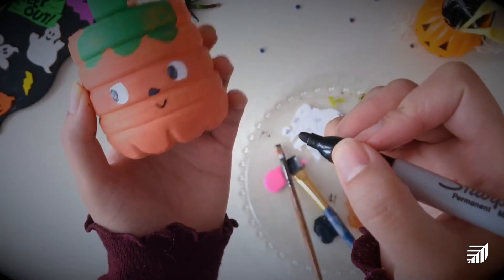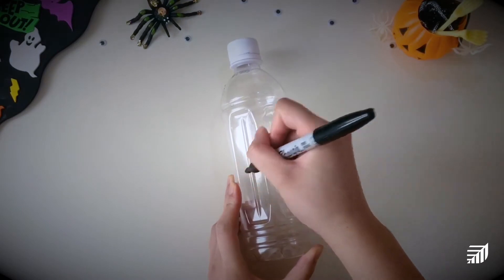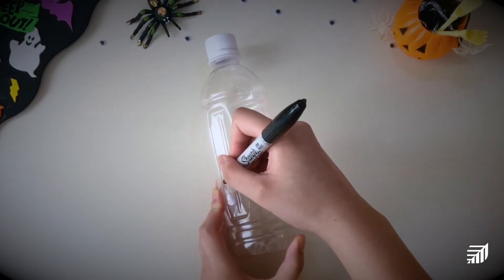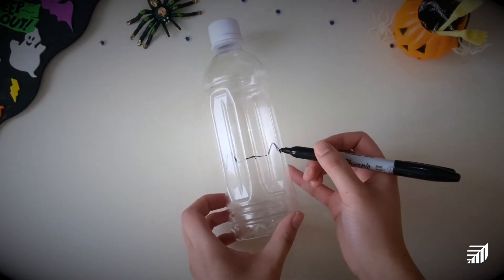Ta-da! We've completed our pumpkin. Next we're going to move on to our cat. So I'm just going to draw some cat ears and wrap the line around the bottle where we're going to cut.